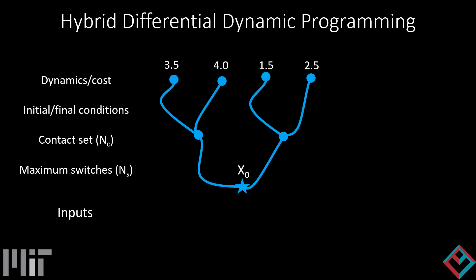Our algorithm takes in a motion model plus cost structure, initial and final conditions, a set of valid contacts, and a maximum number of contact switches. We then use differential dynamic programming to both explore all hybrid modes and rank them based on their cost-to-go.